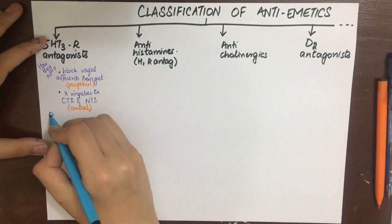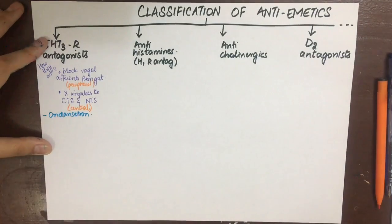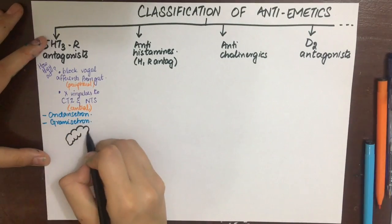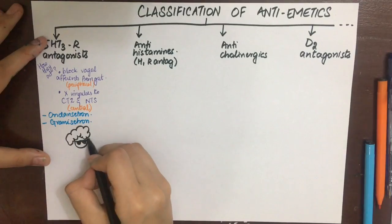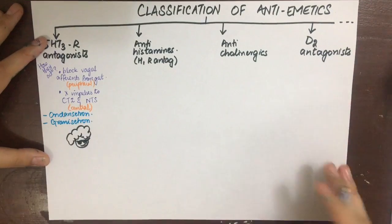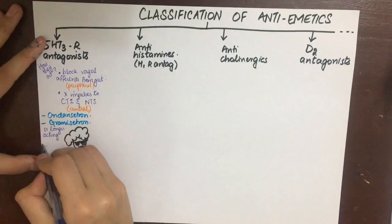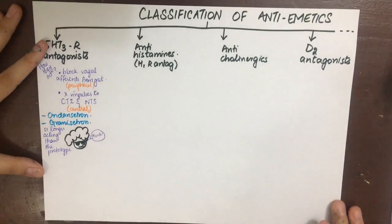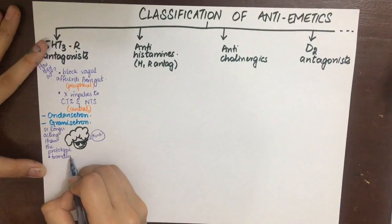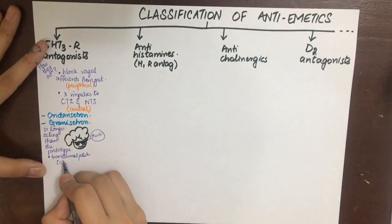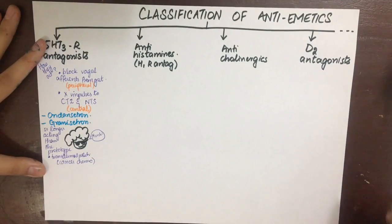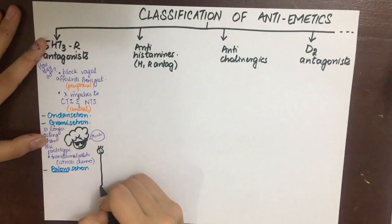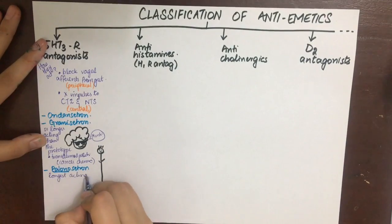The main drugs are ondansetron, which is the prototype. Second is granisetron, which is actually longer acting than the prototype and is used mainly as a transdermal patch for cancer therapy-induced vomiting. Next is palonosetron, which is the longest acting with a half-life of about 40 hours. It prevents delayed emesis of chemotherapy.